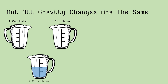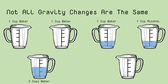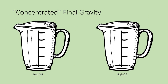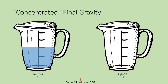If you take one cup of water and add it to a second cup of water, you get two cups. But if you take one cup of water and add one cup of alcohol, you end up with a little less than two cups. Alcohol is weird — it actually concentrates, or makes smaller, volumes of water. This means your final gravity in a high-alcohol beer is somewhat concentrated over what the calculators assume. Think of two beers: one low OG, one high OG, both with the same unadjusted final gravity. The low-gravity beer has a certain volume with dissolved material producing that final gravity reading.